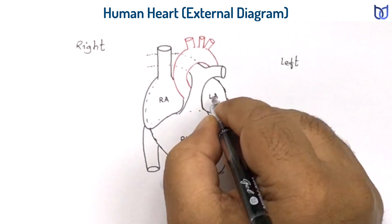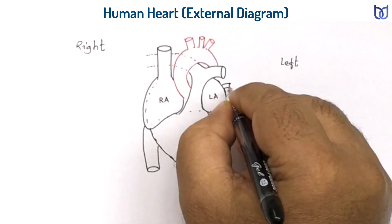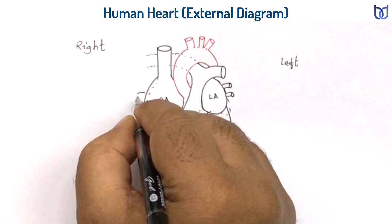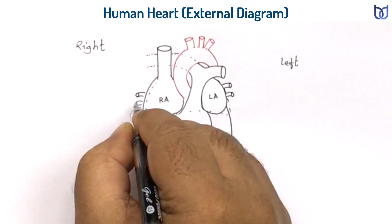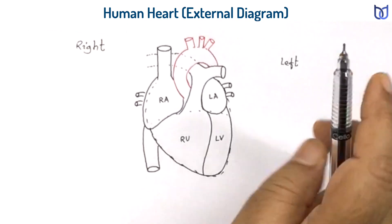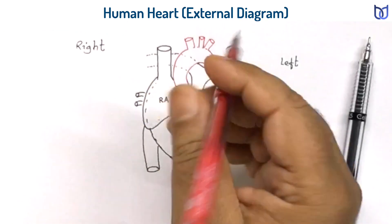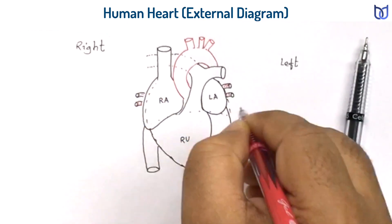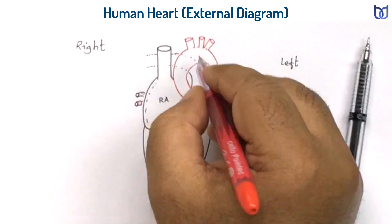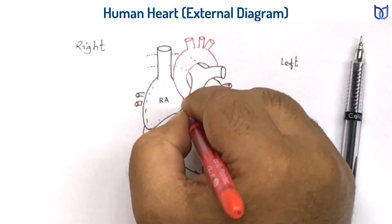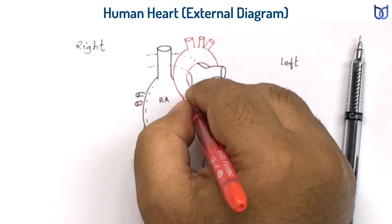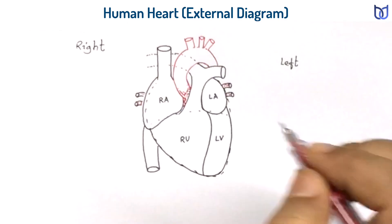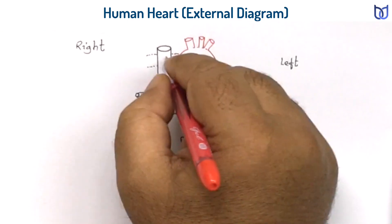The left auricle or left atrium receives four pulmonary veins — two from the left lung and two from the right lung. These pulmonary veins open into the left auricle and carry oxygenated blood. Similarly, the systemic aorta arises from the left ventricle and also transports oxygenated, oxygen-rich blood. These two can be shown in a different color.